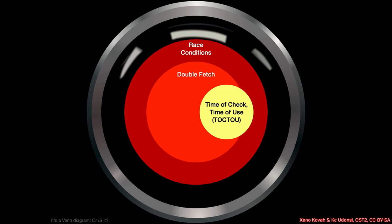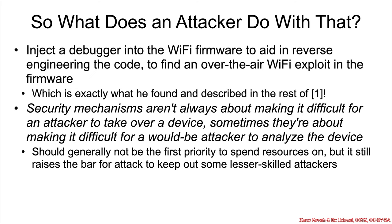What does an attacker actually do with this? The attacker already has full arbitrary code execution in the Linux kernel on the AP, so it's not giving them privilege escalation per se. What an attacker could do — and what the researcher did — is use this capability on their own phone to inject a debugger into the Wi-Fi firmware, which gets loaded after the modem firmware. That aids in reverse engineering the code, which they can then use to find an over-the-air Wi-Fi exploit.